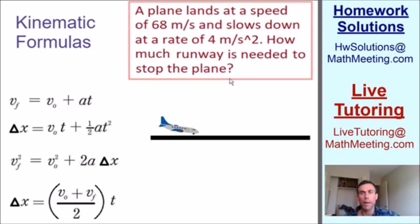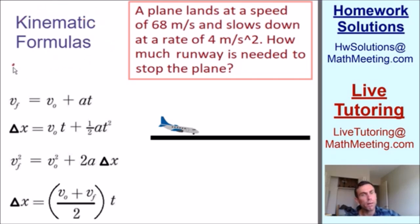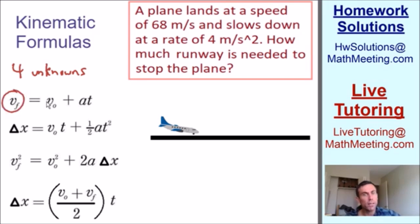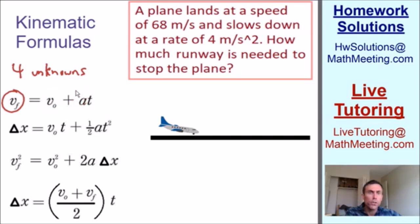For every single kinematic problem, we can use our kinematic formulas. Notice that all of these formulas have four unknowns. Generally, every single problem gives you three of those unknowns and you need to solve for the fourth. For example, this first formula has four unknowns: final velocity, initial velocity, acceleration, and time. Usually you're given three of those unknowns and we need to solve for the fourth.